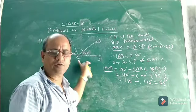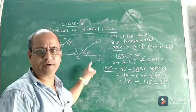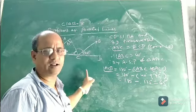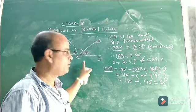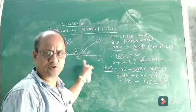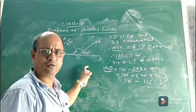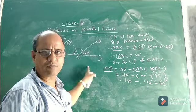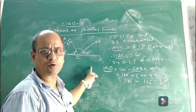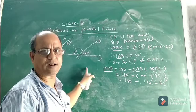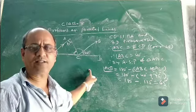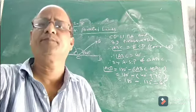So in this way we can find the remaining two angles of the triangle. I hope these two problems which I discussed are understood. We will also discuss more problems about parallel lines in the next class. Thank you.